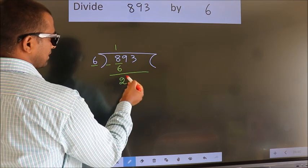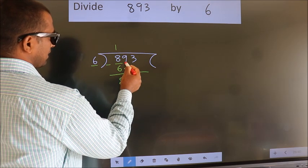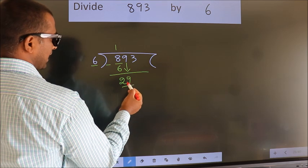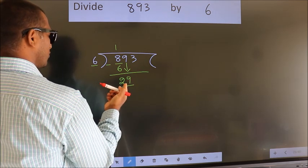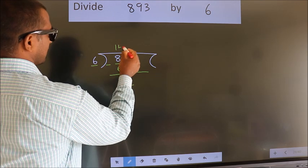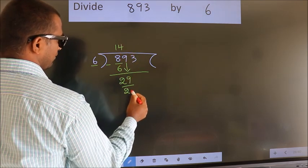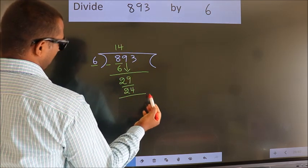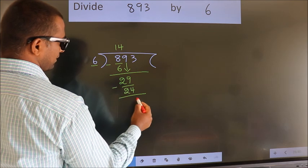After this, bring down the next number. So 9 down. So 29. A number close to 29 in the 6 table is 6 times 4 is 24. Now we subtract. We get 5.